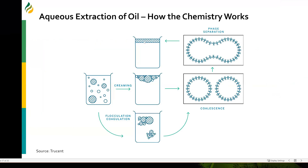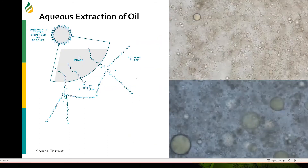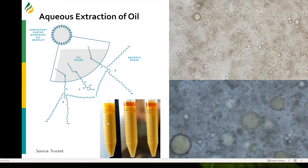Here is how the chemistry works. Oil suspended in the aqueous phase starts to coalesce either via creaming or by flocculation and coagulation by adding surfactants. The oil droplets get bigger, phase separation occurs, and then a centrifuge recovers the oil. Here on the right panel you can see oil droplets in thin stillage, and here are the oil droplets when you add surfactants — and you can see the lipid layer on top of the thin stillage formed with two different surfactants.